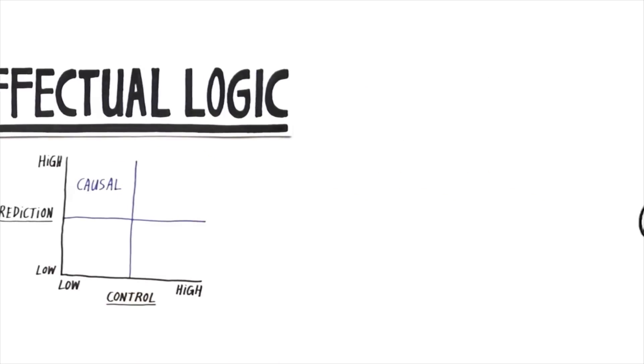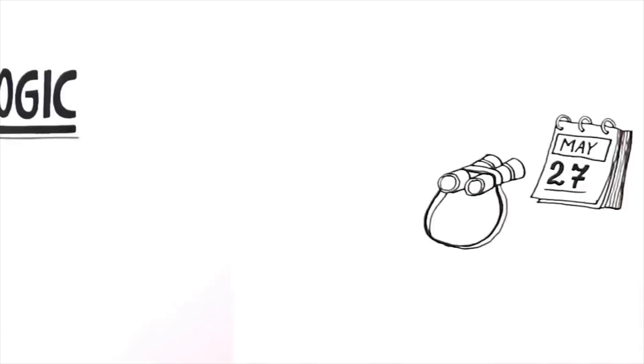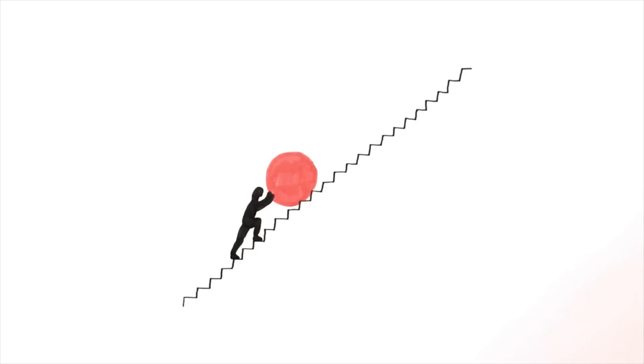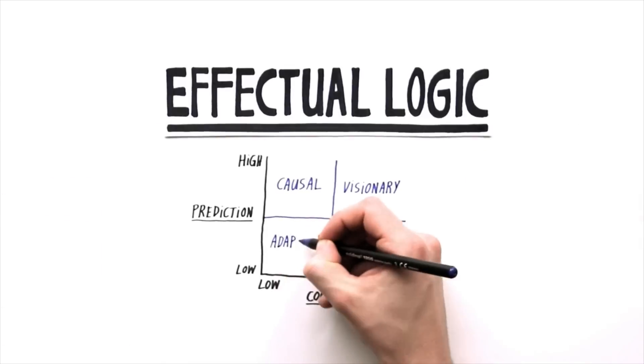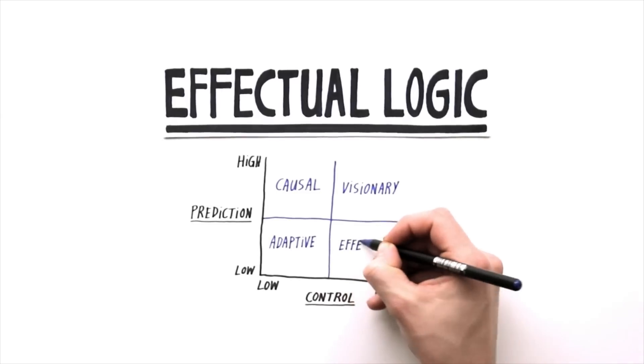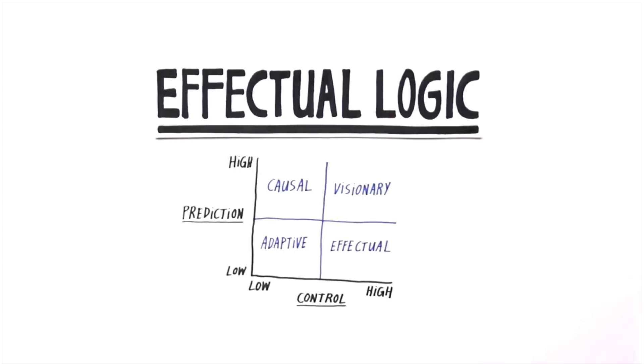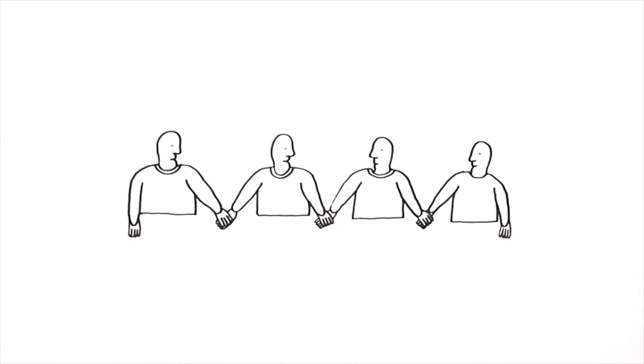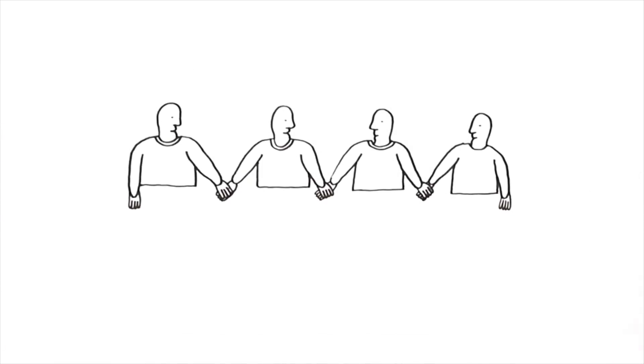Where causal logic focuses on prediction and planning, visionary logic is mostly based on persistence, adaptive logic seems a process of trial and error. Effectual logic offers principles that help entrepreneurs in control, even though the future cannot be predicted.